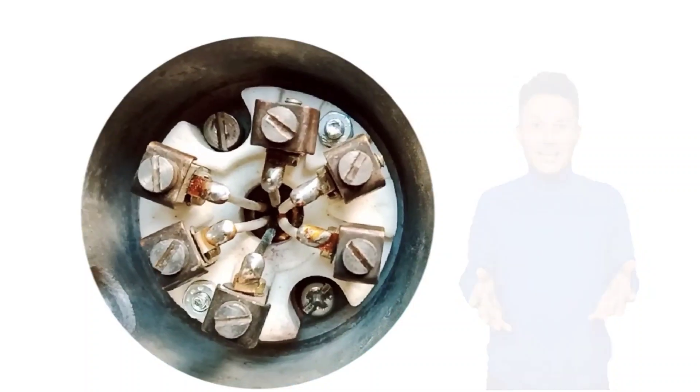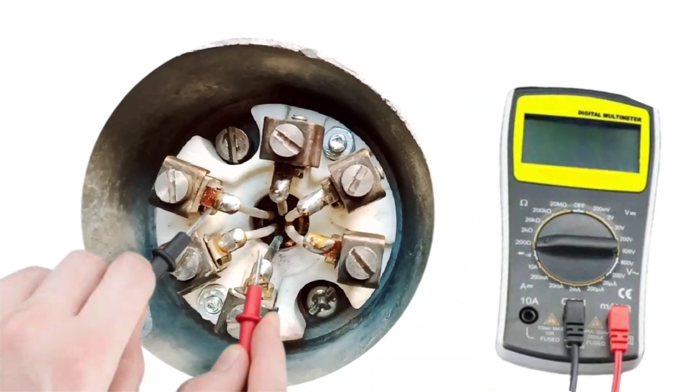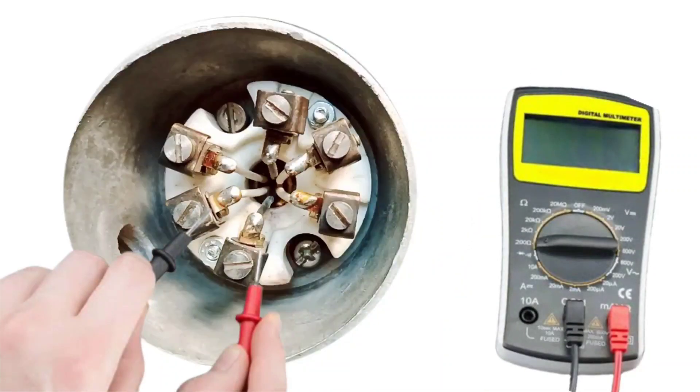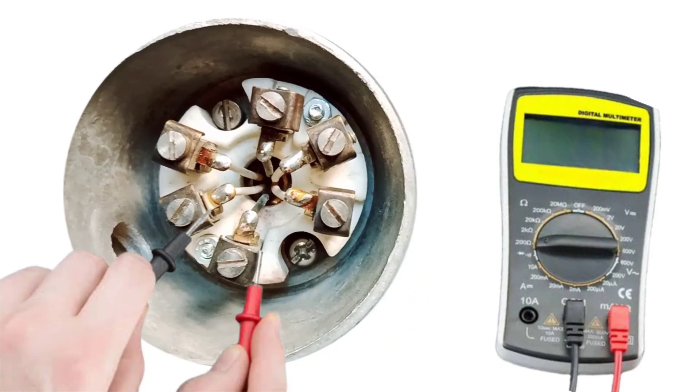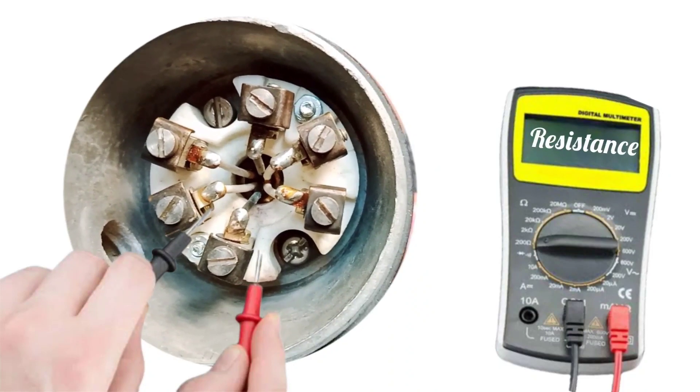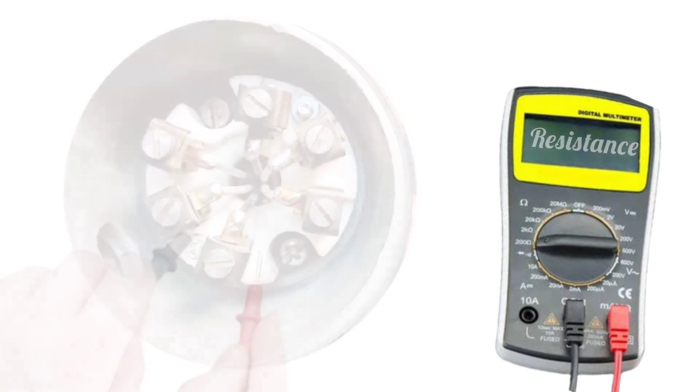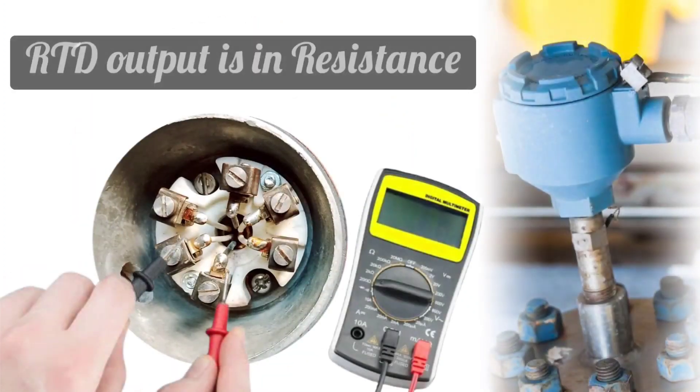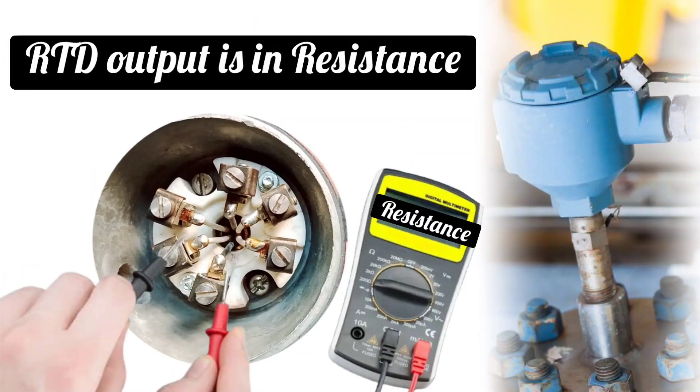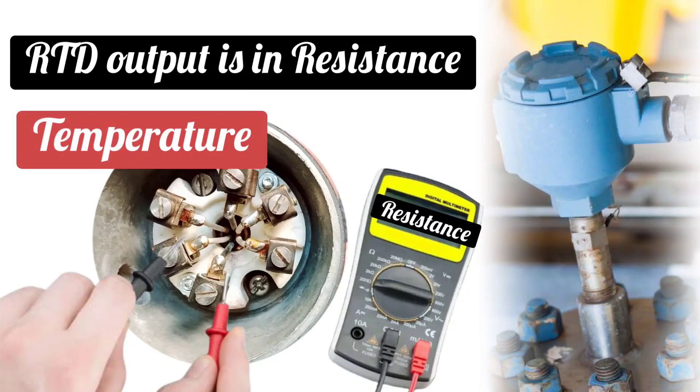One knob of multimeter is put at white color wire, and another one is put at black color wire, and we will check the resistance. RTD's output is resistance, and from this resistance, temperature is calculated.